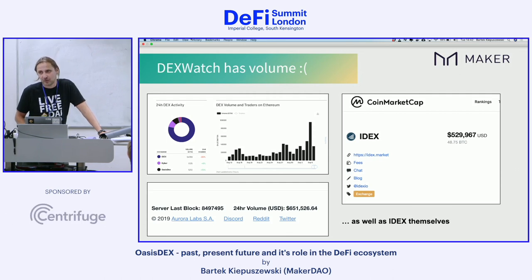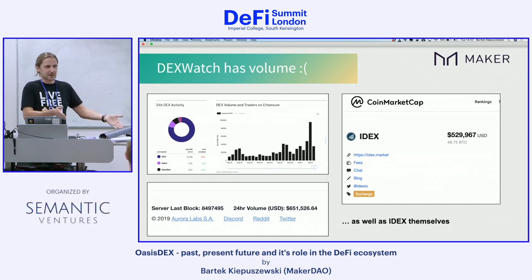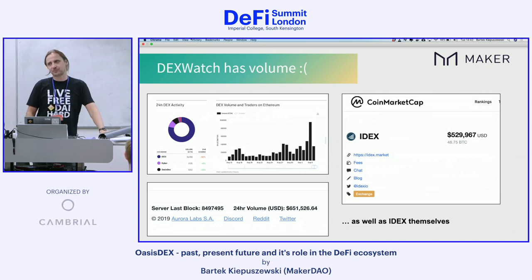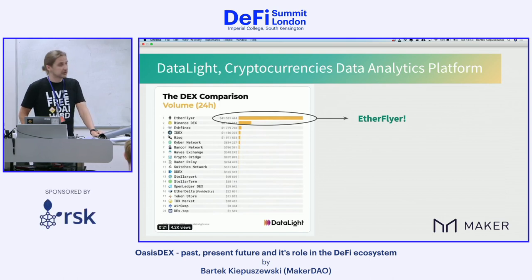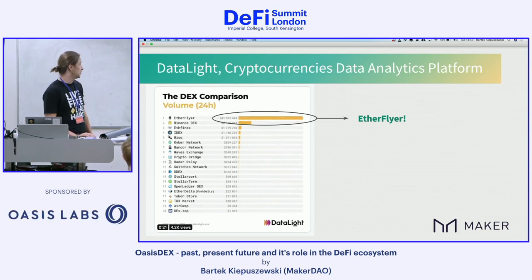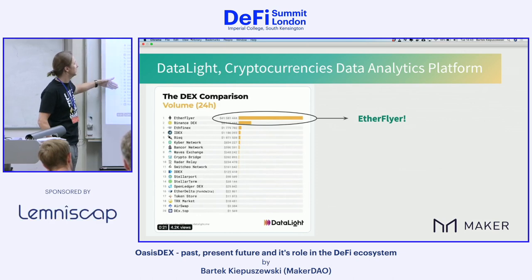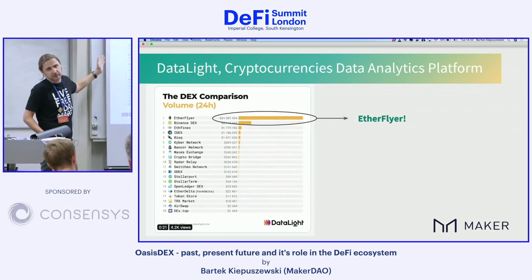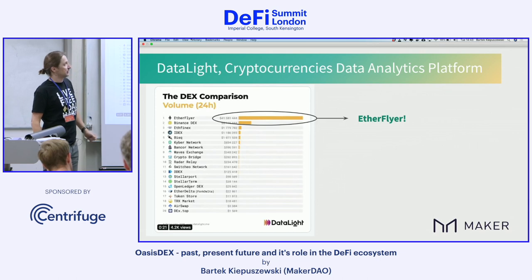I don't know — this is blockchain. Everyone should come up with the same data. Why don't people come up with the same data? The last one is the Datalite analytics platform. They published a report about DEXes showing 24-hour volume of different DEXes — quite a lengthy report. And it turns out, looking only at Ethereum-based DEXes, the number one by far is something called EtherFlyer.